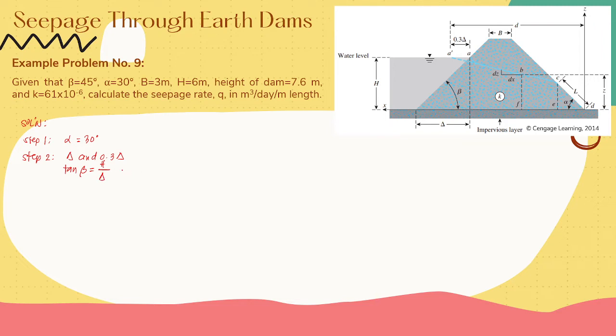Rearranging, delta equals h all over tangent beta, or 6 meters all over tangent 45 degrees, or 6 meters. And for 0.3 delta, this is equal to 0.3 times 6, that is 1.8 meters.